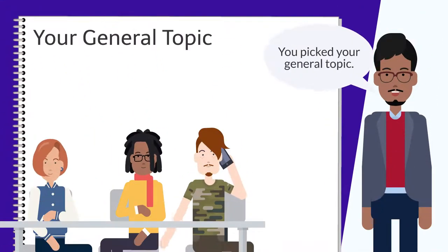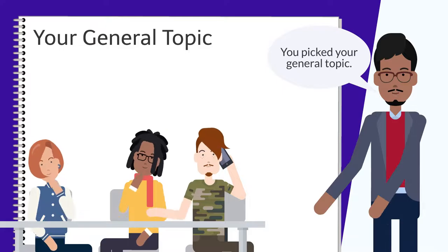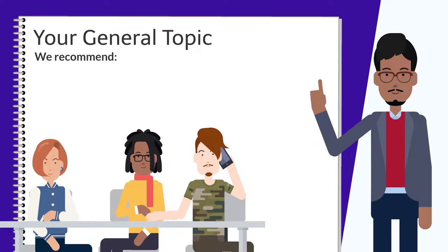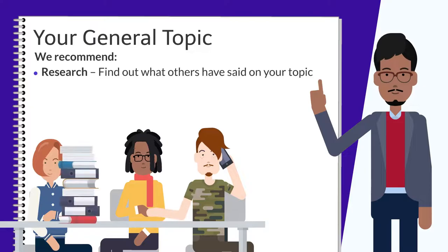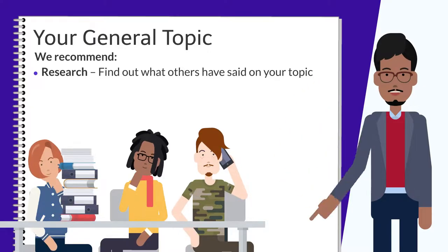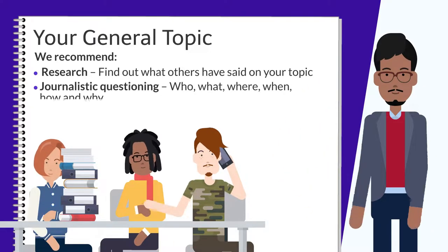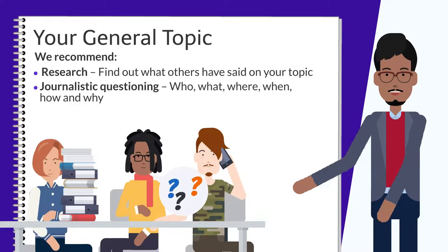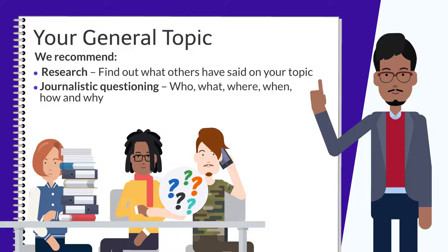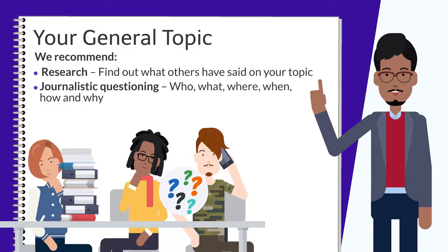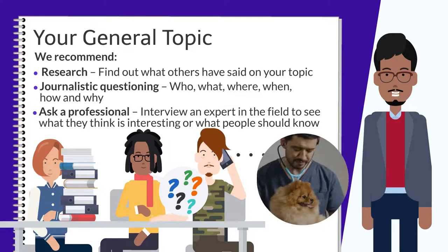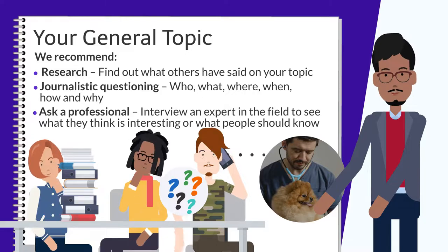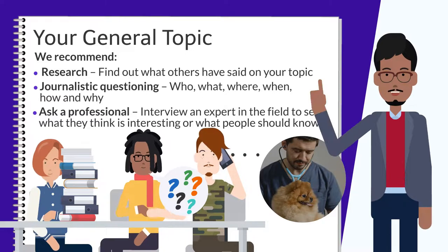Once you've picked your general topic, we have a few suggestions for how to narrow it down into something that can be covered in a short speech. We recommend: Research — find out what others have said on your topic. Journalistic questioning — start organizing your content by asking yourself who, what, where, when, how, and why. And ask a professional — interview an expert in the field to see what they think is interesting or what people should know.